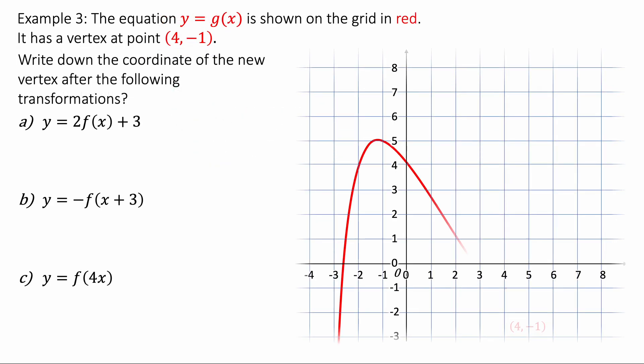We can now look at example 3. We've got the equation y equals g of x shown on the grid in red. It has a vertex at 4 minus 1. Write down the coordinate of the new vertex after the following transformations.